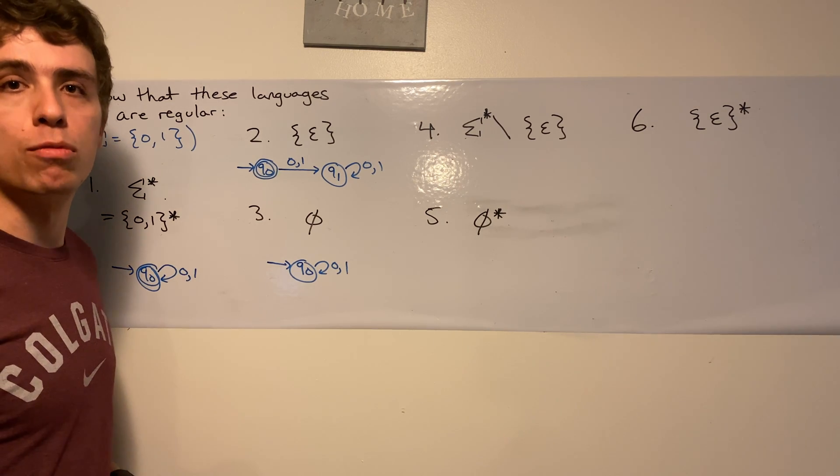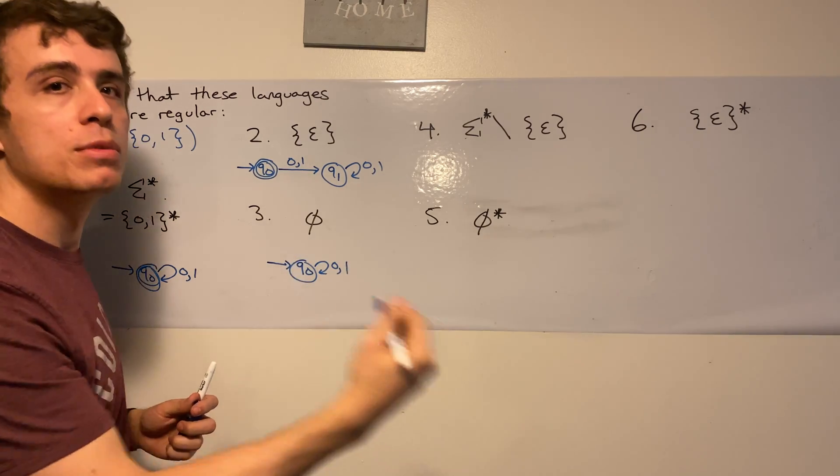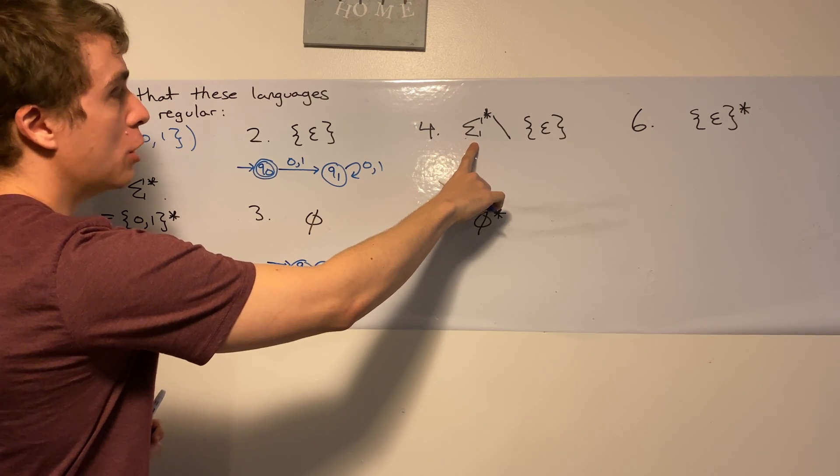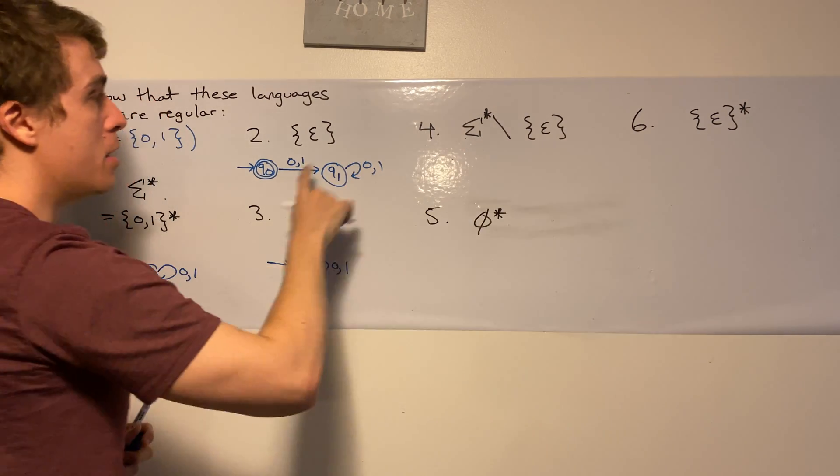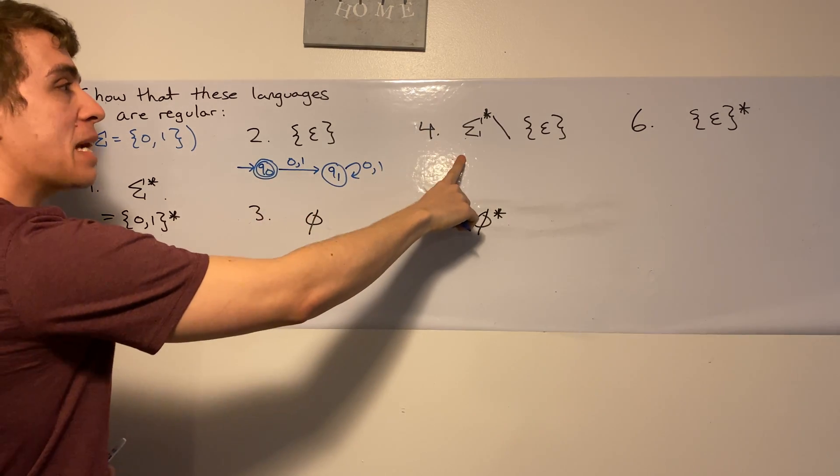So whenever you're making a DFA, always try to form it in terms of other DFAs you've already made. So this language has every string not in this one. So in order to make a DFA for here,